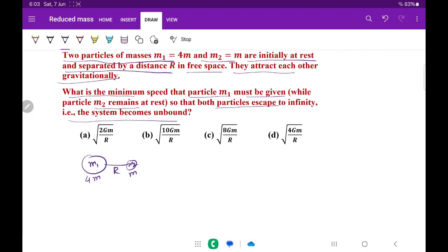What is the minimum speed that particle m1 must be given while m2 remains at rest so that both particles escape to infinity, that is, the system becomes unbound? Now we want to give a velocity to m1 such that it goes to infinity, so they are both permanently separated. We will replace the two-body system into a reduced mass system.